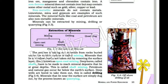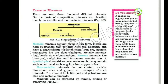Minerals can be extracted by mining, drilling or quarrying. A rock is an aggregate of one or more minerals but without definite composition of constituent minerals. Rocks from which minerals are mined are known as ores. Although more than 2800 types of minerals have been identified, only about 100 are considered ore minerals.